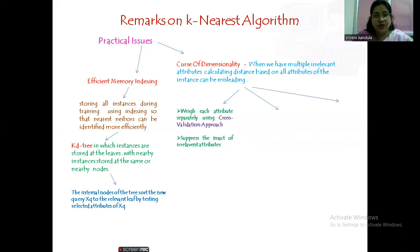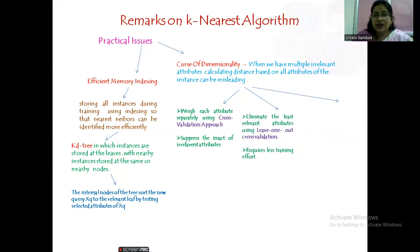To identify relevant versus irrelevant attributes, first weigh each attribute separately instead of giving equal weightage to all. A cross-validation approach can be followed to suppress the impact of irrelevant attributes. The next approach is to eliminate the least relevant attributes using leave-one-out cross-validation: each time, one attribute is left out and the result is calculated, to identify which attributes improve performance. This requires less training effort and is somewhat better than standard cross-validation.